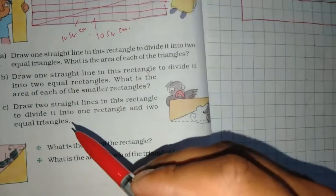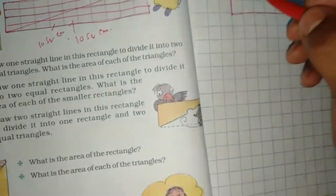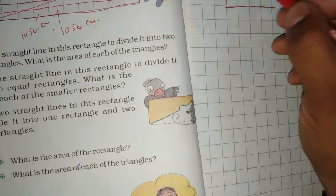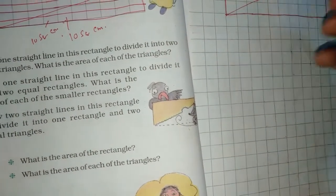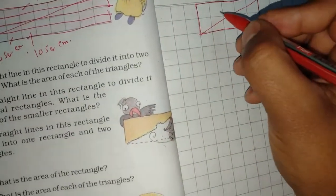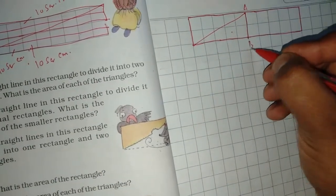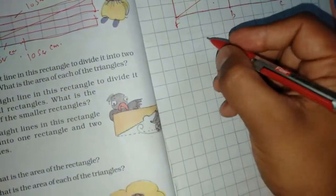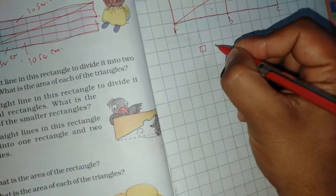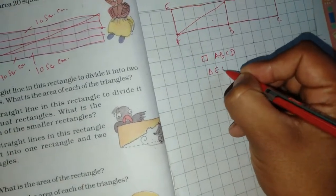Divide it into one rectangle and two equal triangles. You will have a triangle. Rectangle ABCD and a triangle EFA, or a triangle FAB. Clear?